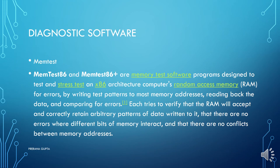Now, having seen the diagnostic hardware, we will look at diagnostic software. First is memtest. Memtest86 and Memtest86+ are memory test software programs designed to test and stress-test an x86 architecture computer's random access memory for errors, by writing test patterns to most memory addresses, reading back the data, and comparing for errors. Each tries to verify that the RAM will accept and correctly retain arbitrary patterns of data. Basically, memtest is used to check for errors in RAM.